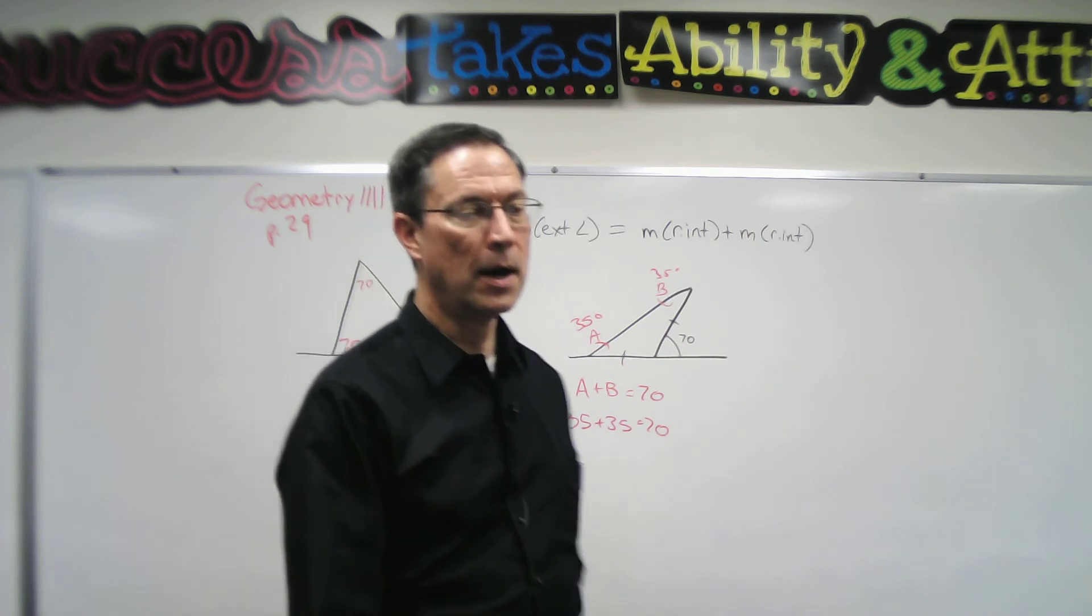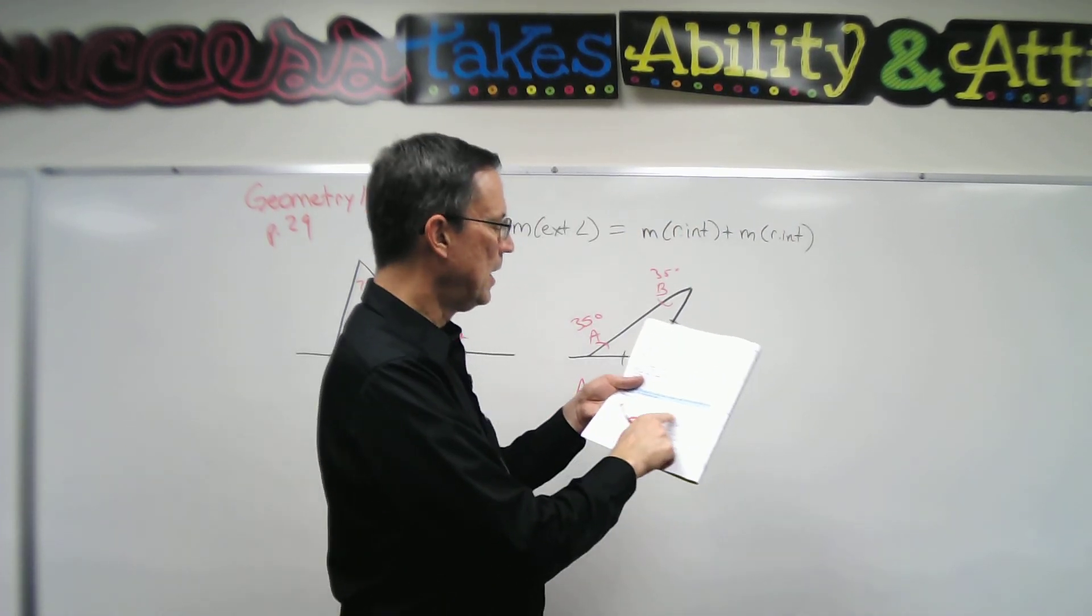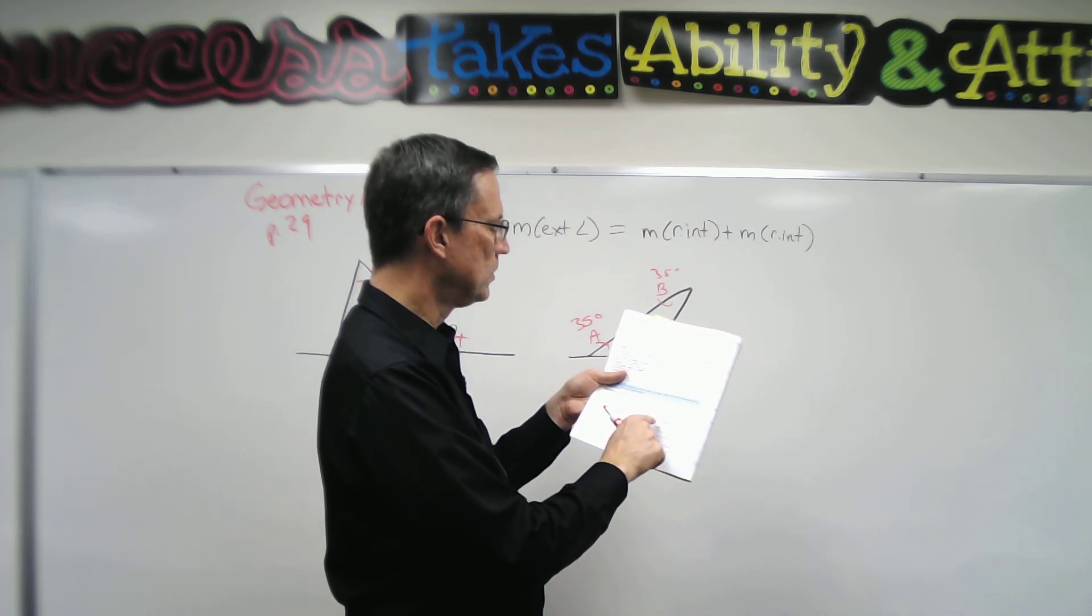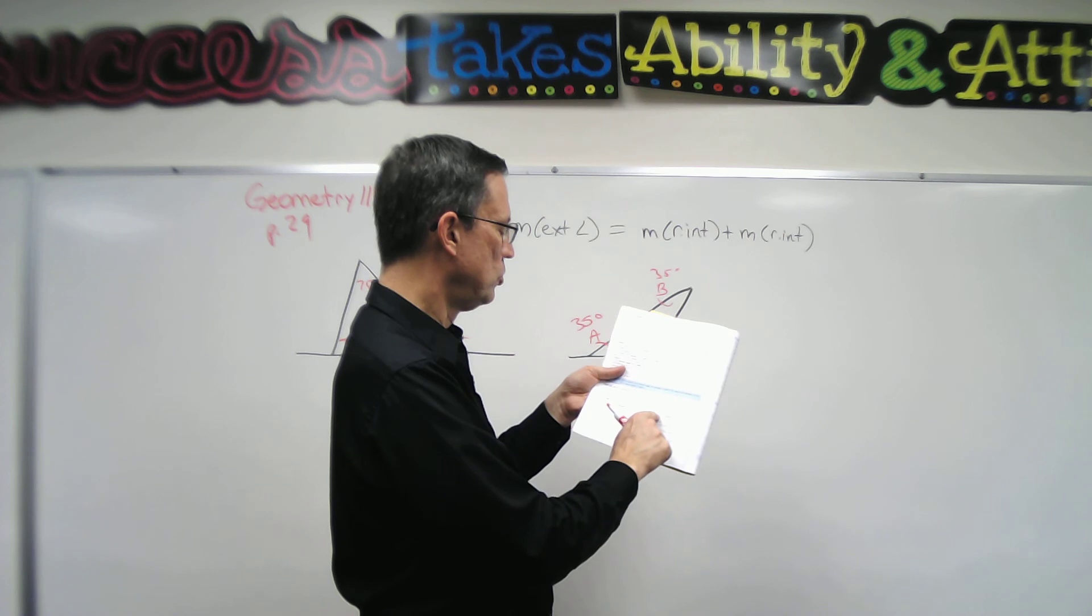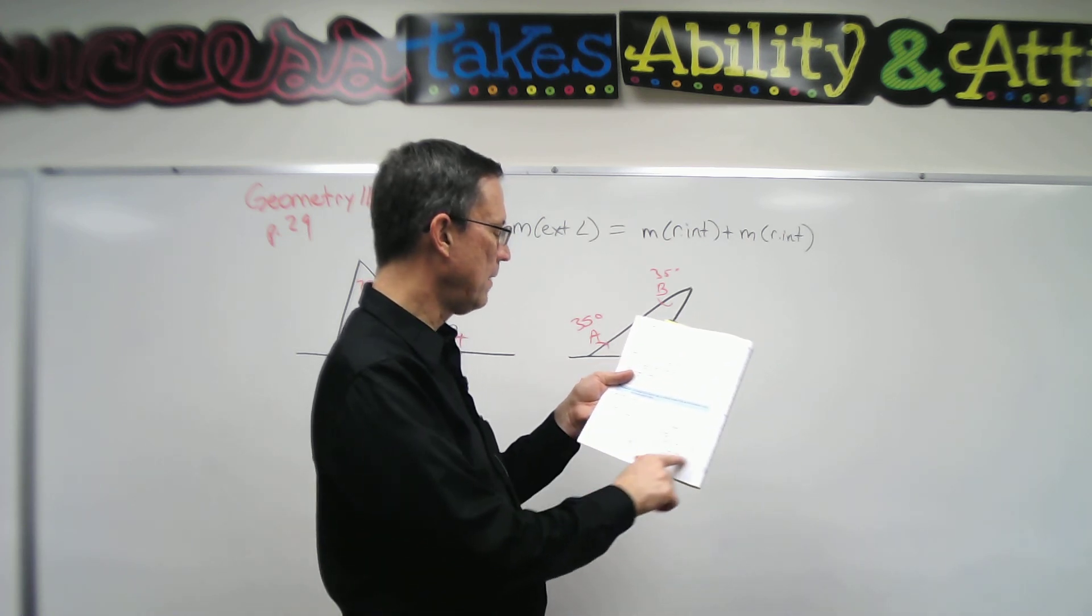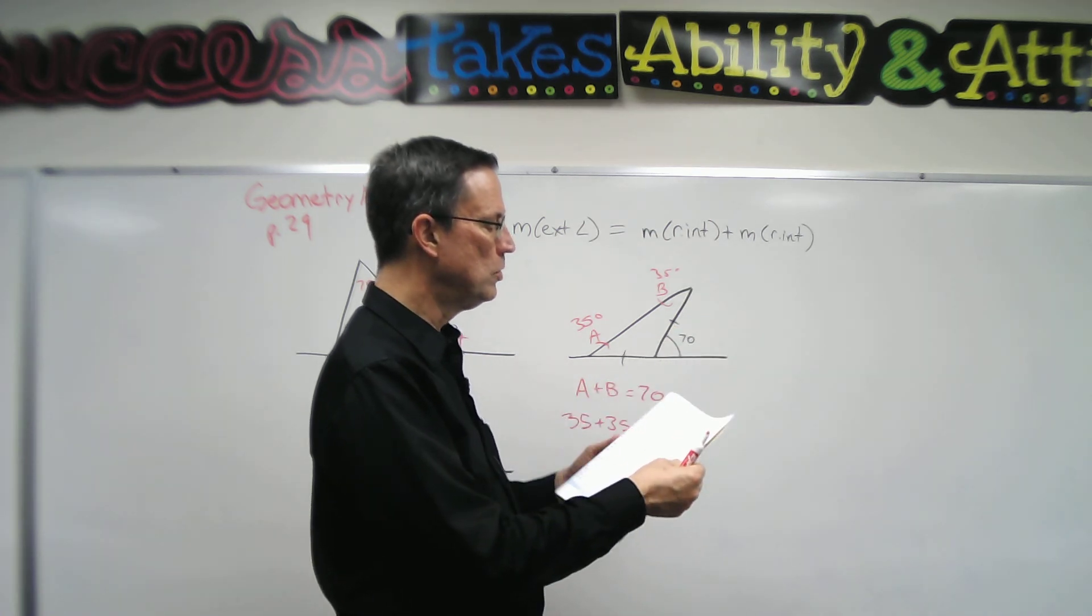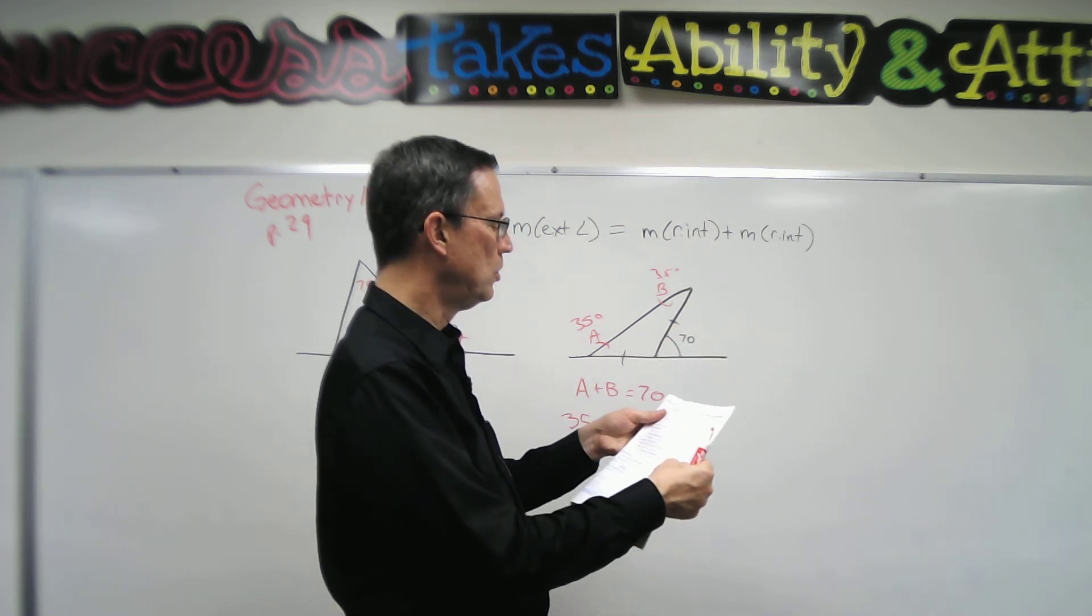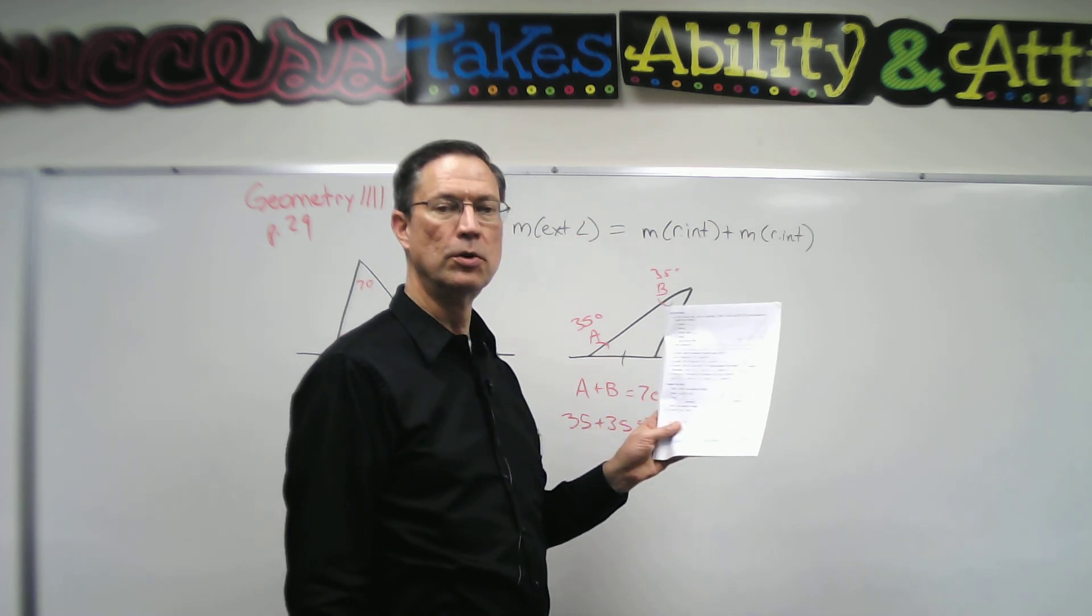So as you work through the proof here on page 29 and looking at the different diagrams, you will see that like angle one plus angle two would be equal to angle BCD. Now they're showing how we get to that proof. But once they have shown this and proven this, then we can use that proof to do some of these other problems here on page 30.